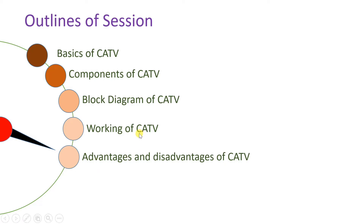So, what is CATV? CATV is Community Access Television System, or one can say Community Antenna Television System. In short, this is Cable Television System. Let us begin this session with the first agenda, that is the basics of the CATV system.